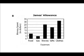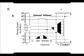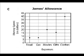Now let's look at B. This is also a bar graph. In this bar graph it shows we have $8 worth of food, $4 worth of gas, $25 worth of movies, $20 worth of gifts, and $32 worth of clothes. You know this one's wrong, so we can immediately eliminate this one.